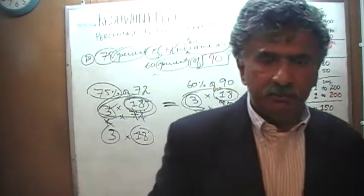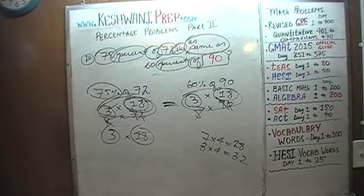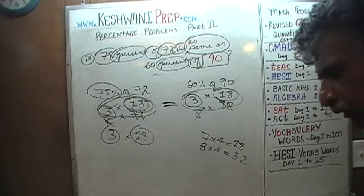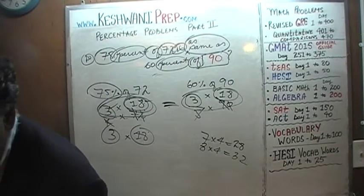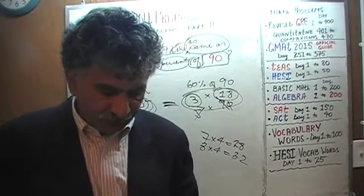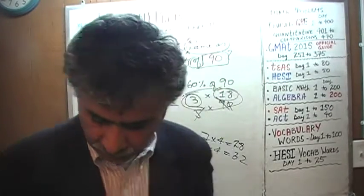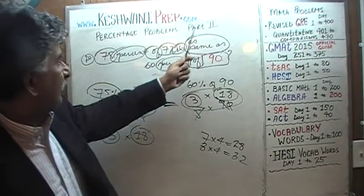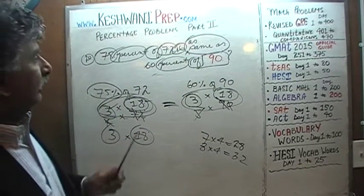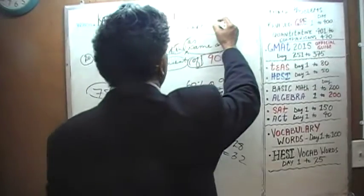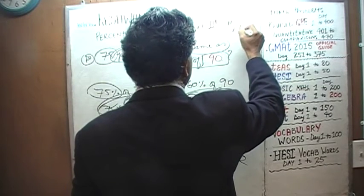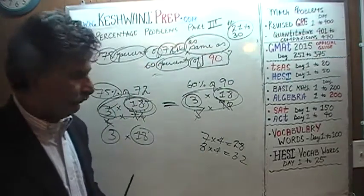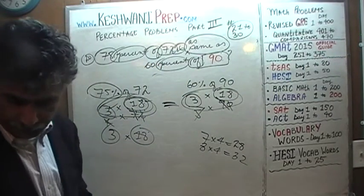I think I'm going to stop here. We have 10 more percentage problems to do, but if I were to continue this video would become very long. In part 1 we did problems 1 through 10, in part 2 we did 11 through 20, and in part 3 we'll do numbers 21 through 30. Look for part 3 in the next video. Bye for now.